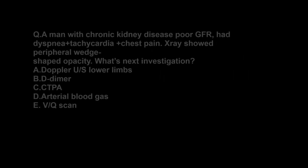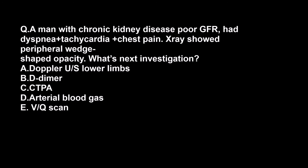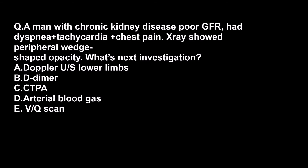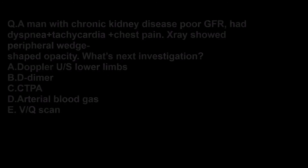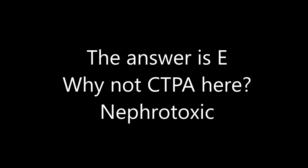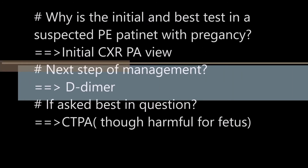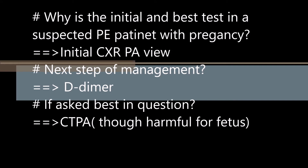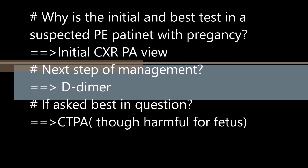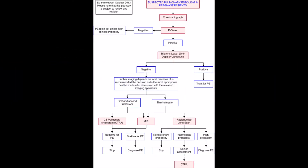Consider what to do during pregnancy and renal impairment. For renal impairment, the initial tests are the same, but the best test is not CTPA because it's nephrotoxic. For pregnancy, the approach is a bit different — you need to do a d-dimer at a point, but otherwise the best test remains CTPA.